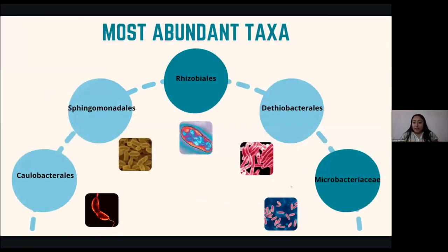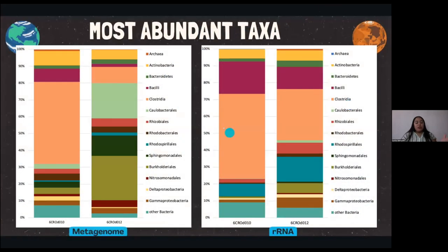I found very interesting things. The first was the most abundant taxa present in these wells — we have five groups: Caulobacterales, Sphingomonadales, Rhizobiales, Desulfobacterales, and Microbacteriaceae. In another result that Dr. Seidler shared with me, during the analysis of the metagenome the main groups that come up are Actinobacteria, Clostridia, and Rhodospirillales. And when we analyze the ribosomal RNA, we can see that there are Bacilli, Clostridia, and Sphingomonadales.